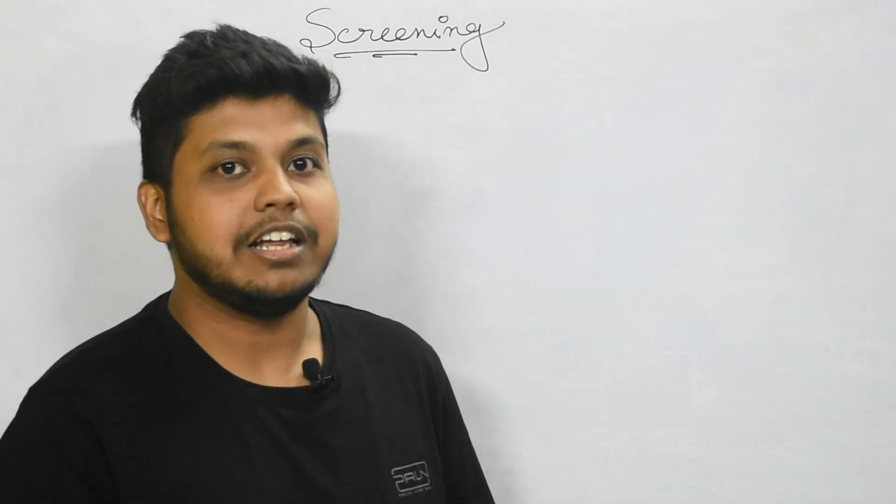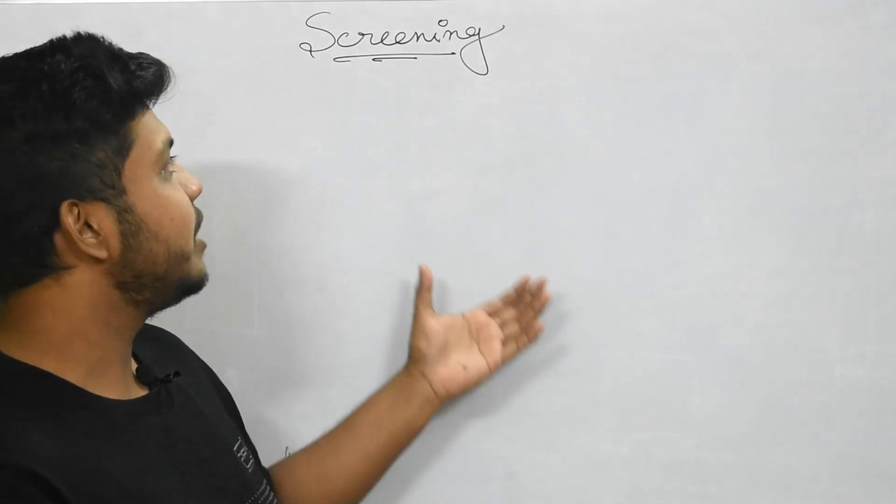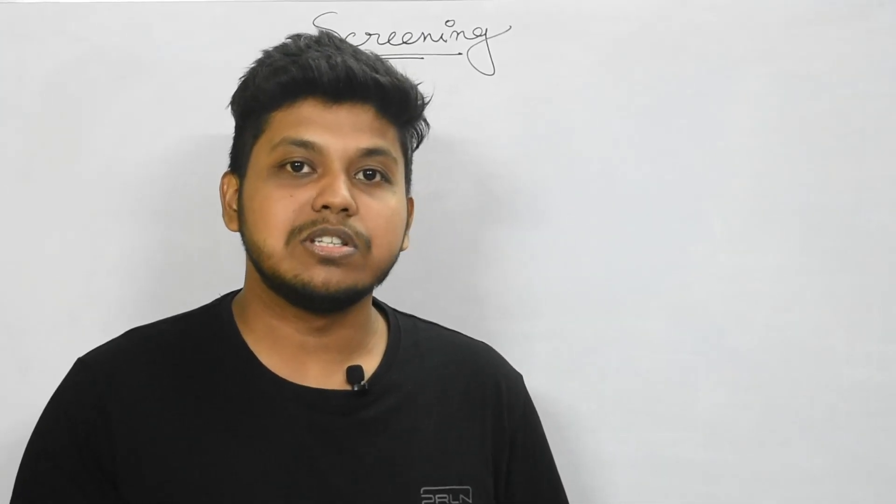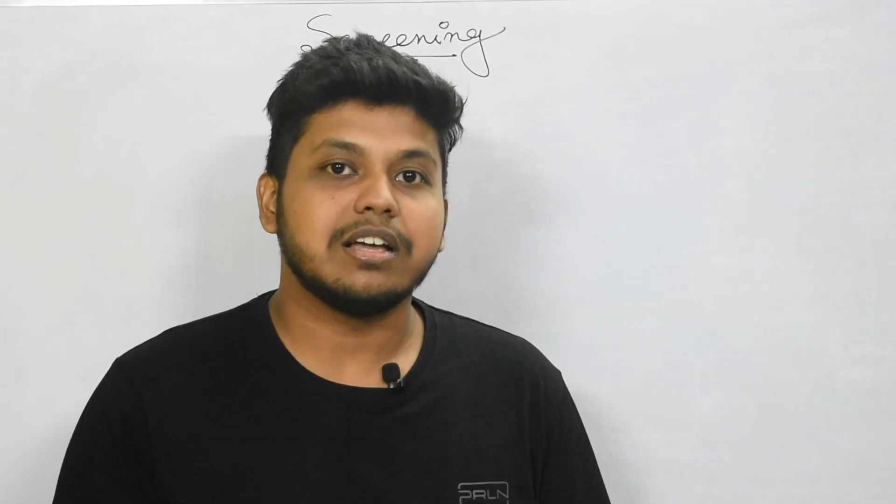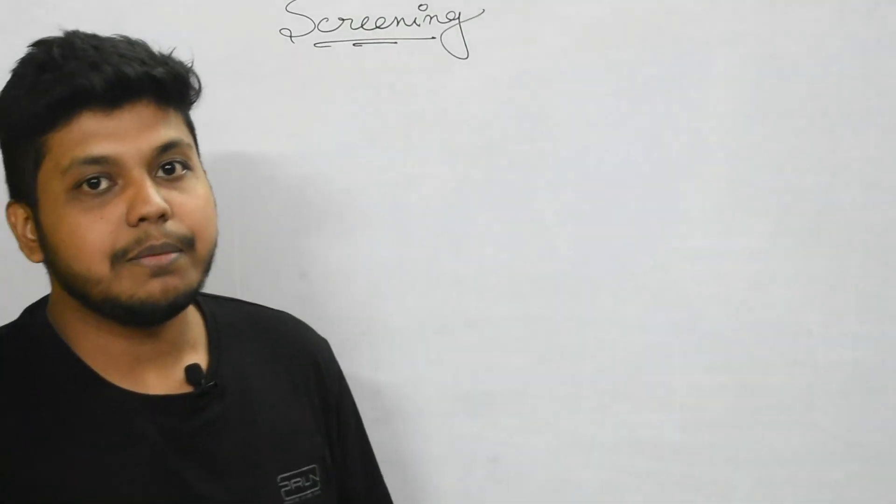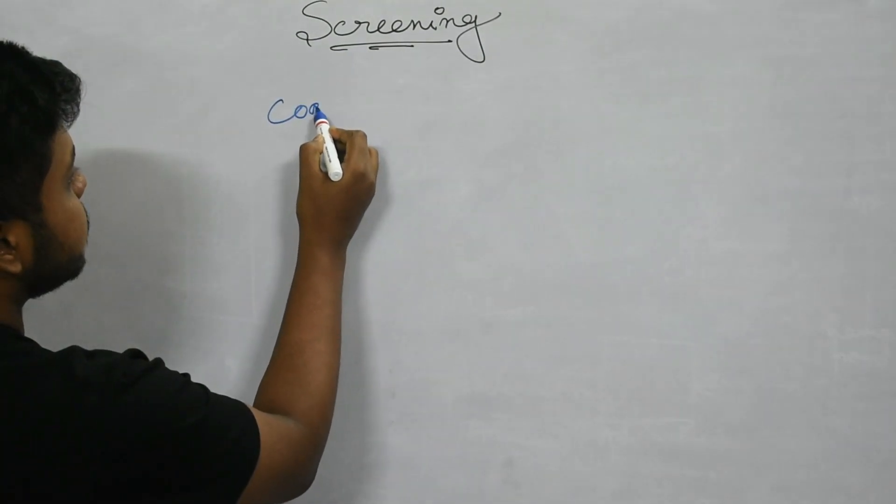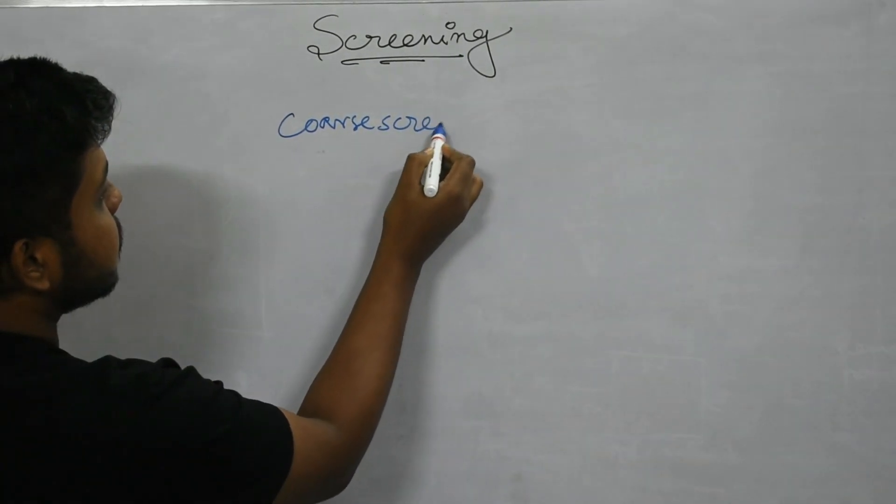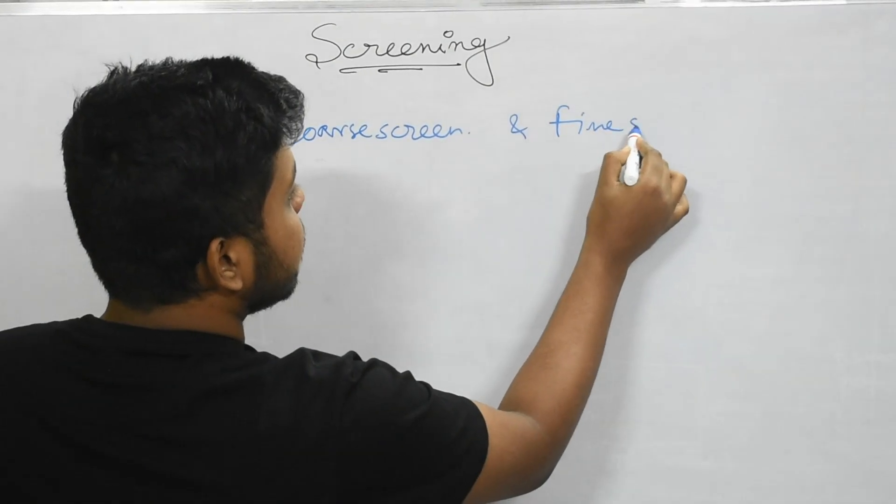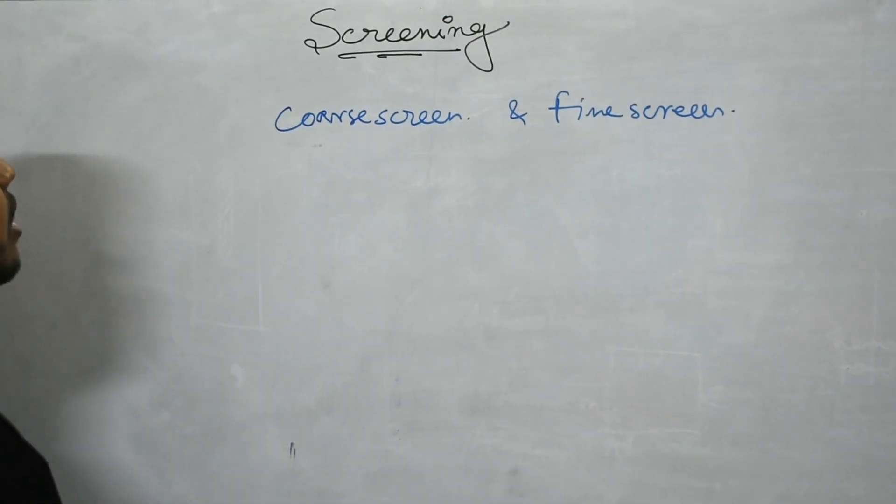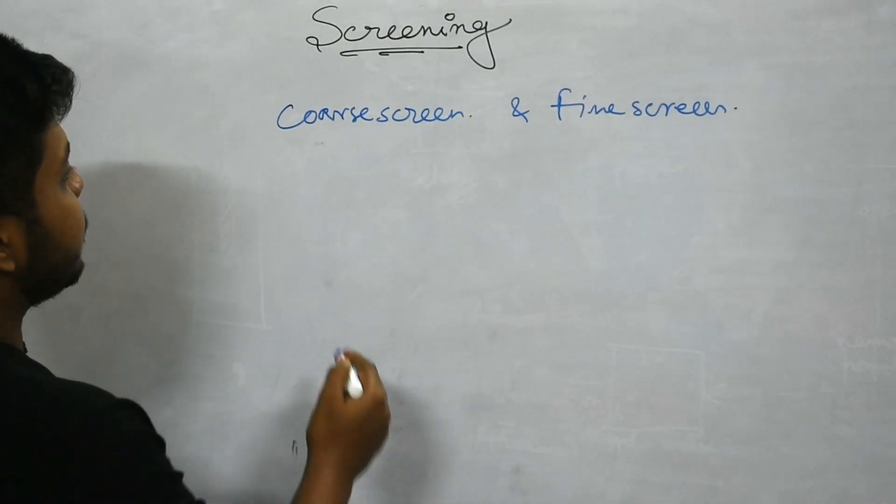We will focus today in detail on different unit processes starting with screening. What is screening? Screening is the removal of larger suspended particles like stones, debris, trees, etc. Screening is done by providing coarse screens and fine screens. These are the types of screens. Now we will go further with the details of the screen.